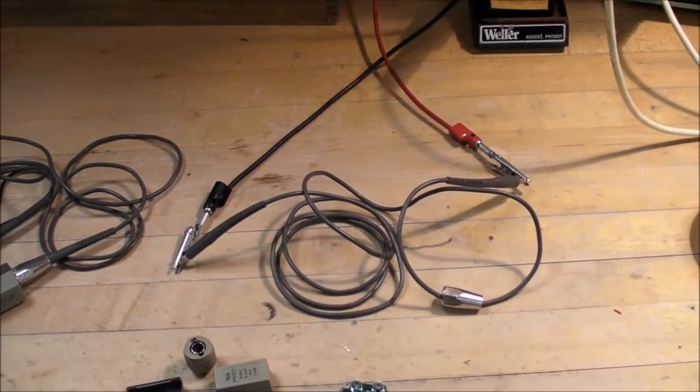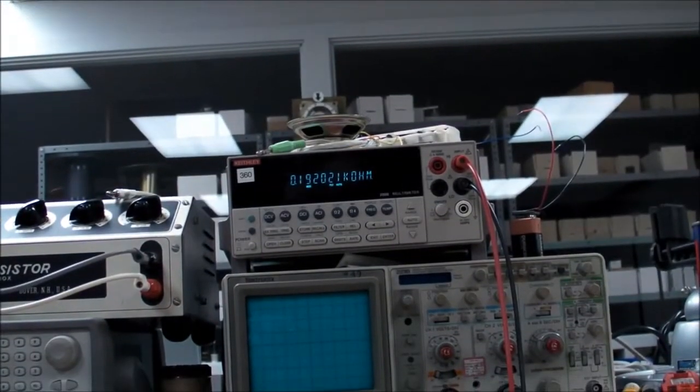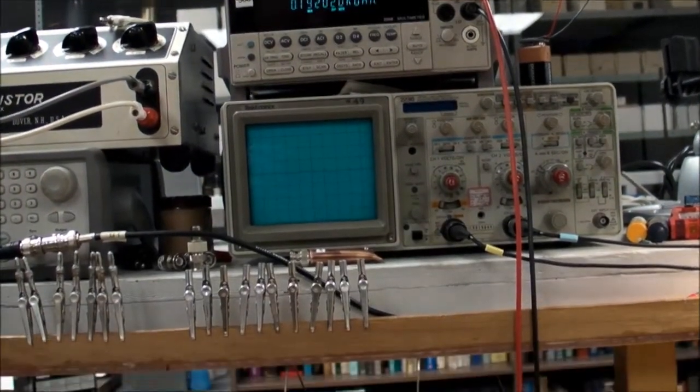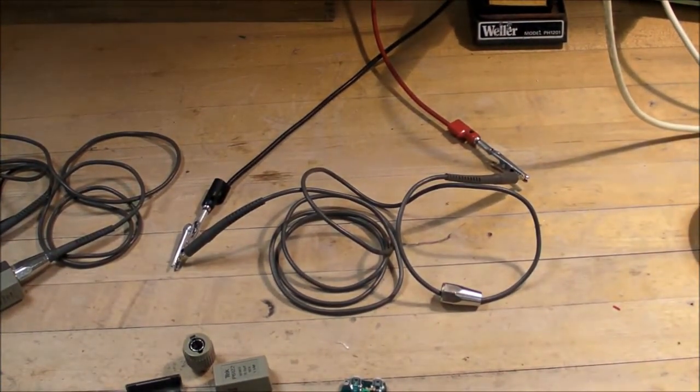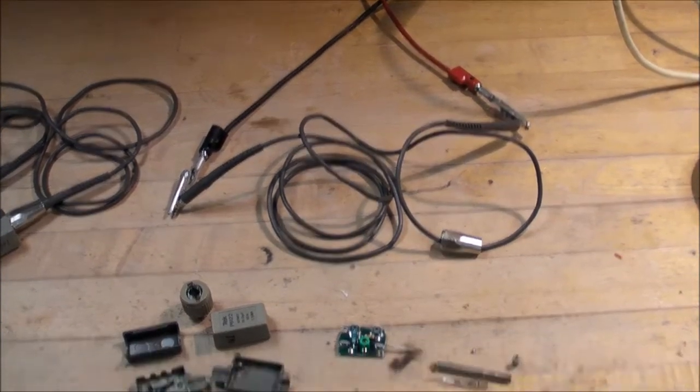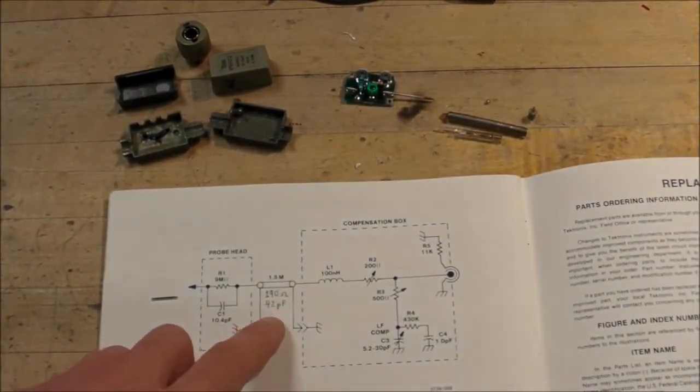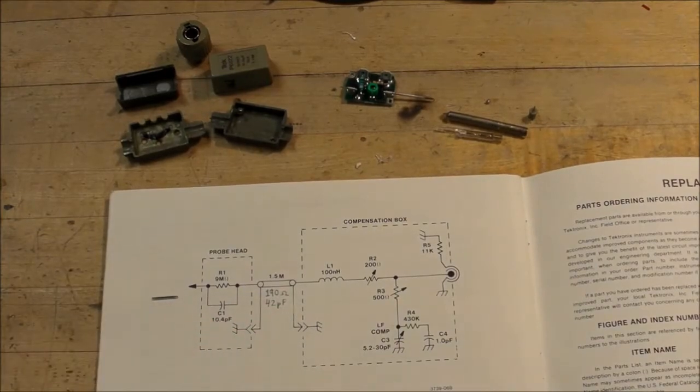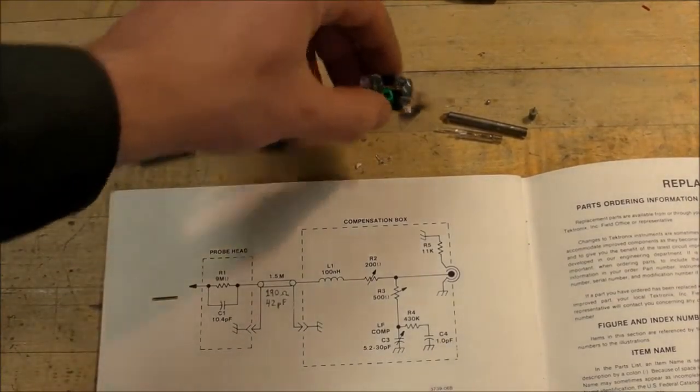So I took apart the compensation box and separated the cable. Here you can see I got the cable hooked up to an ohmmeter and we're looking at 190 ohms. It's not a clear coax cable with a minimum resistance wire in there. It's actually designed to have a certain DC resistance. And I also measured about 42 picofarads between the center conductor and the shield of that coax.